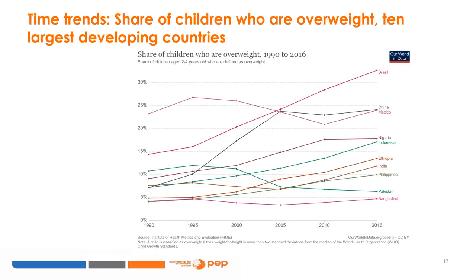A graph showing the share of children aged 2 to 4 years who are overweight for the 10 largest developing countries observed between 2006 and 2016 reveals that, while some countries like Pakistan, Bangladesh, and Mexico are bucking the trend, overall we observe a relatively steep and concerning upward trend, especially given that it shows a fairly short period of 10 years.